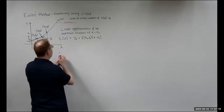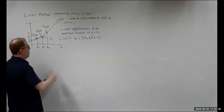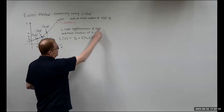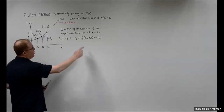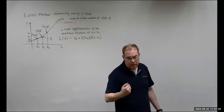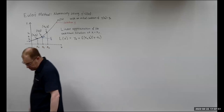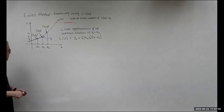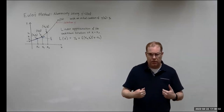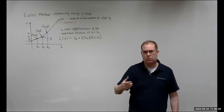The linear approximation equation is L(x) = y₀ + f(x₀, y₀)·(x − x₀), where x₀ and y₀ are known from the initial condition. Plugging those into the function gives us the slope of the solution. We also use a uniform discretization, meaning each x value is separated by delta x, or h.